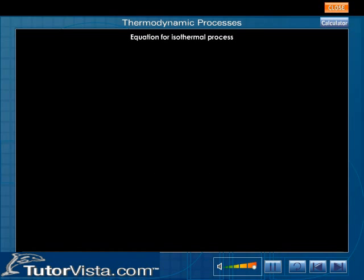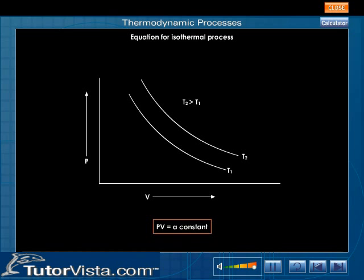Equation for isothermal. For an isothermal process, T is constant, so PV is equal to a constant. The variation of P with V is as shown here.